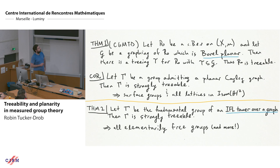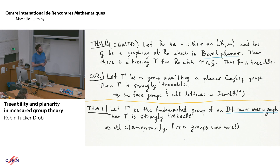We showed that if we have a graphing of an equivalence relation that is Borel planar, then the equivalence relation is treeable, and moreover there is a treeing of the equivalence relation whose edges come from that planar graph — we can remove some edges from the planar graph and what remains is a treeing. As a corollary, if Γ is a group admitting a planar Cayley graph then Γ is strongly treeable, since pasting the Cayley graph onto every orbit gives a Borel planar graphing.